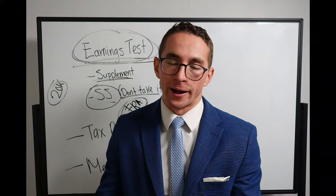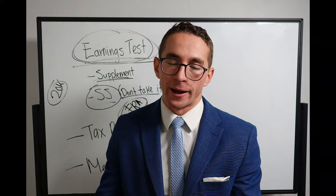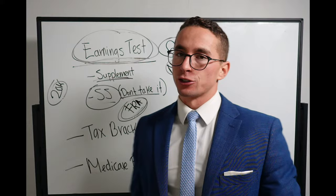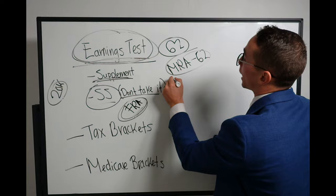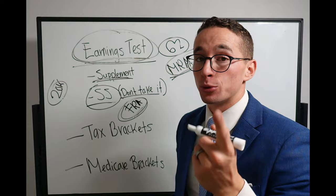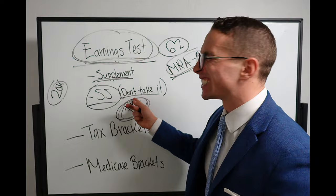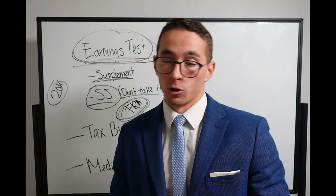Once you hit your full retirement age, there's no more earnings test. That goes away. You can make as much money as you want. They don't care. They're not going to touch your social security benefits. So the first supplement has an earnings test between your MRA and 62. Social security has an earnings test between 62 and your full retirement age. So if you're working, you don't need social security, just don't take it probably until either your full retirement age or you're done working or you need it or that sort of thing.